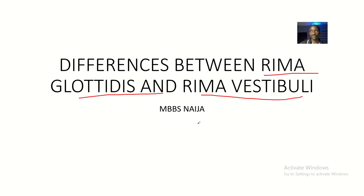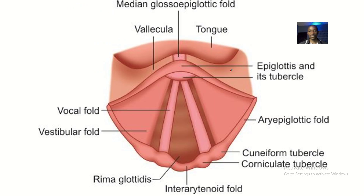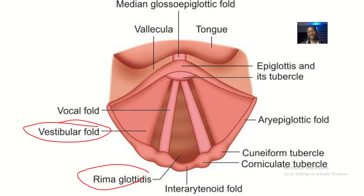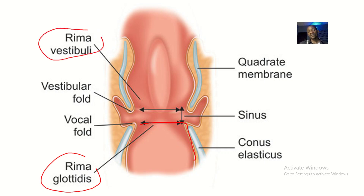So the question is: differentiate rima glottidis from rima vestibuli. One is related to the false vocal cords and one is related to the true vocal cords. Rima glottidis is related to the true vocal cords, which are inferior in the laryngeal cavity, while rima vestibuli is related to the false vocal cords, which are superior in the laryngeal cavity.